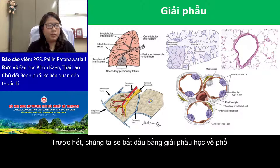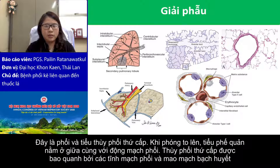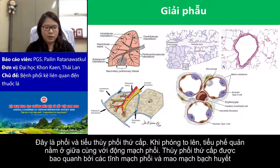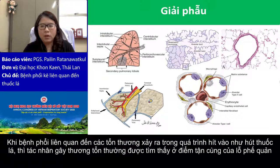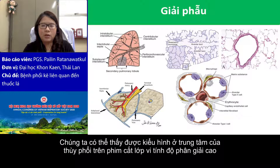Let me begin with the lung anatomy. This is the lung and this is the secondary pulmonary lobule. To zoom in, this is the secondary pulmonary lobule. This is the bronchiole and this is the pulmonary artery. The bronchiole and pulmonary artery is in the middle of the secondary lobule. The border of the secondary lobule is the pulmonary vein and lymphatic vessel. When the disease is associated with inhalation injury like cigarette smoke or dust inhalation, the culprit lesion is usually found at the terminal bronchiole. You can see the centrilobular pattern on HRCT if the lesion is located in the terminal bronchiole.